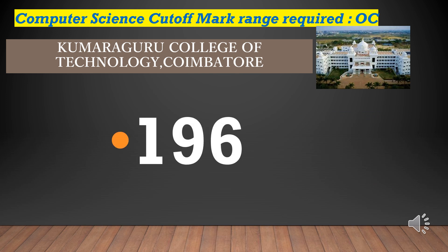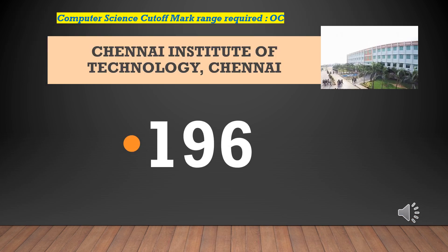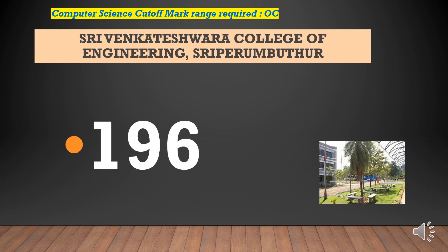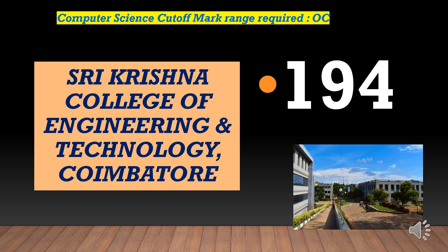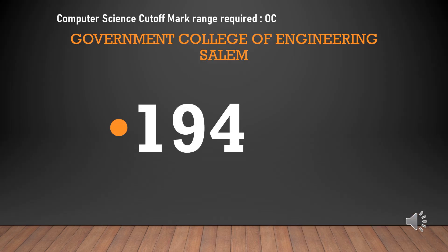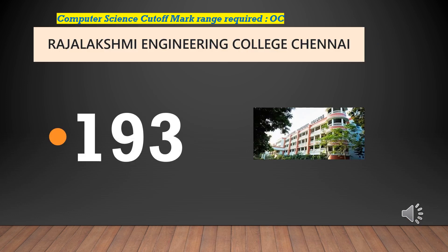Kumara Guru College of Technology — cut-off required for CSEOC is 196. Chennai Institute of Technology — cut-off required for CSEOC is 196. Shri Venkatishwara College of Engineering — cut-off required for CSEOC is 196. Shri Krishna College of Engineering and Technology — cut-off required for CSEOC is 194. Government College of Engineering Salem — cut-off required for CSEOC is 193. RMK Engineering College — cut-off required for CSEOC is 193.